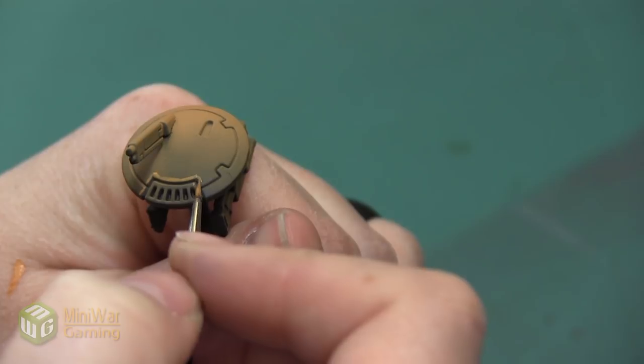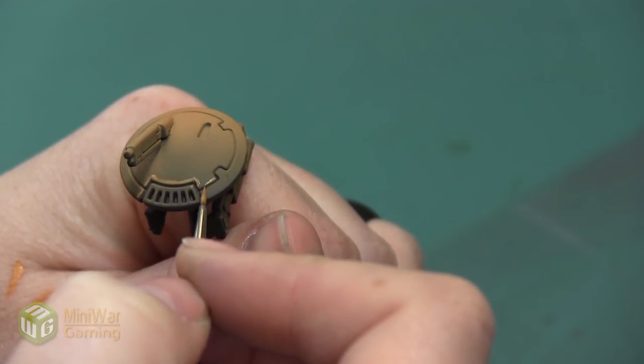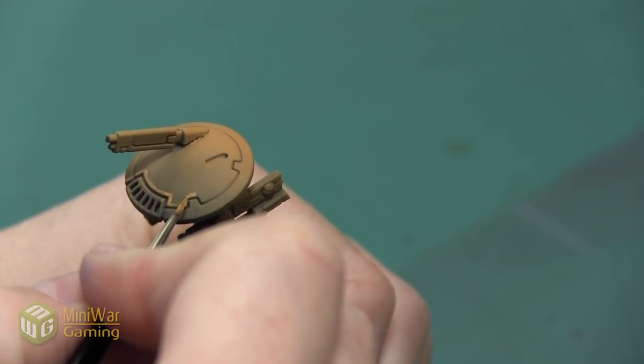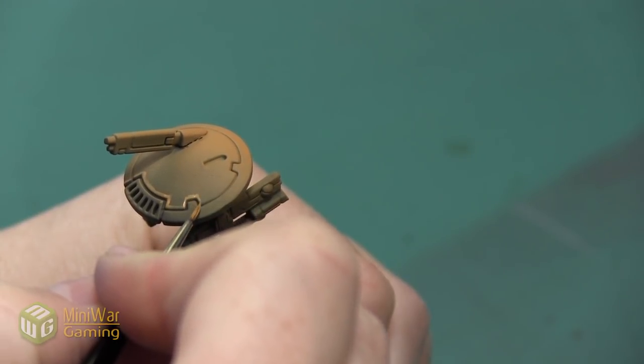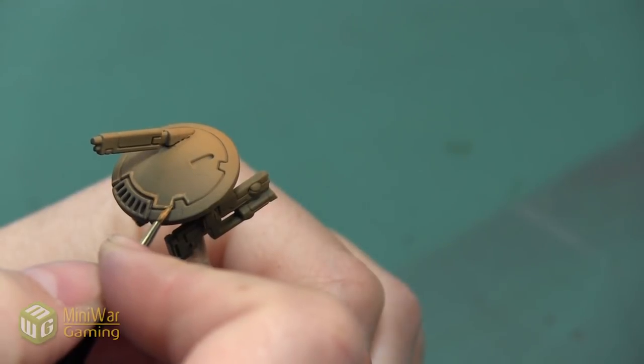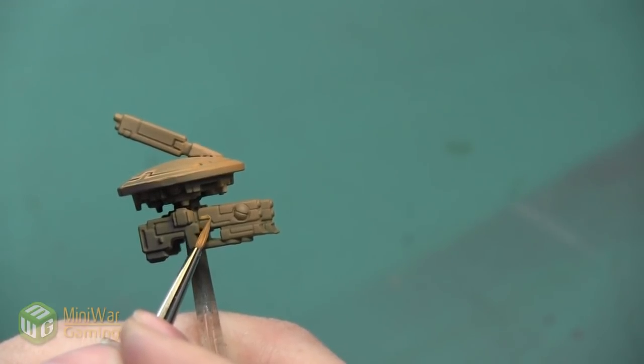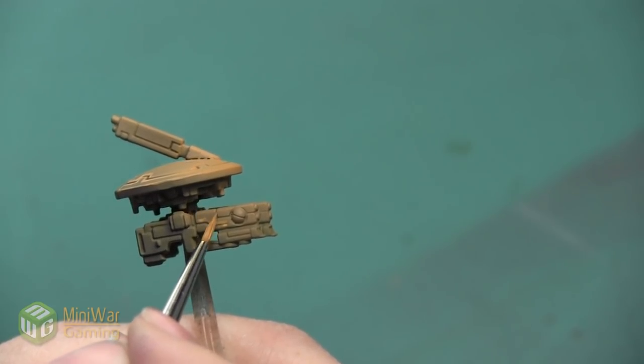So I'm just using a small detail brush and I'm going to lightly trace these lines. I want to do both sides of the line and really kind of highlight that detailing. After I finished lining the top, I want to make sure that I line the antenna and these guns on the bottom of the drone.